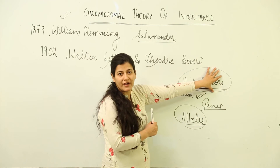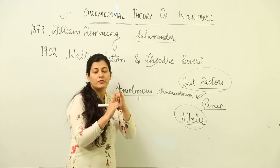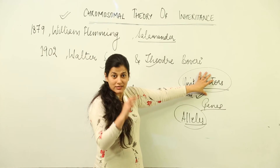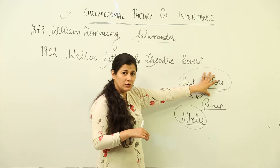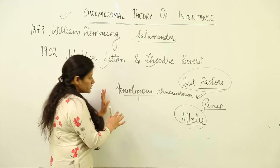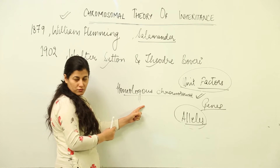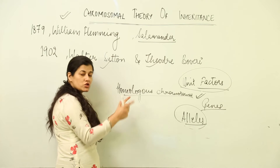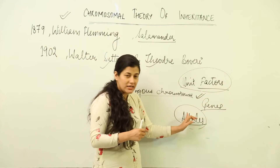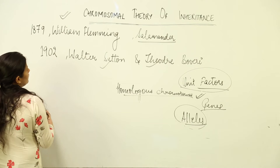Mendel proposed that for any phenotypic character — for example, height — it would be governed by a factor inside the cell. That factor would have two distinguished forms known as alleles. In the chromosomal theory of inheritance, during meiosis we have a homologous pair of chromosomes, and the gene located on it has alleles occupying each of the chromosomes.